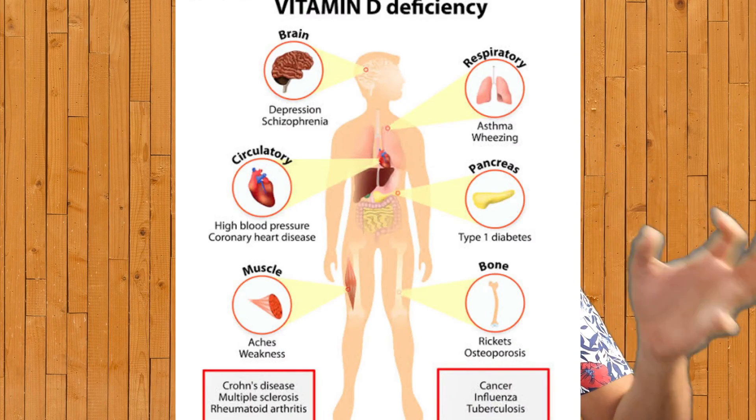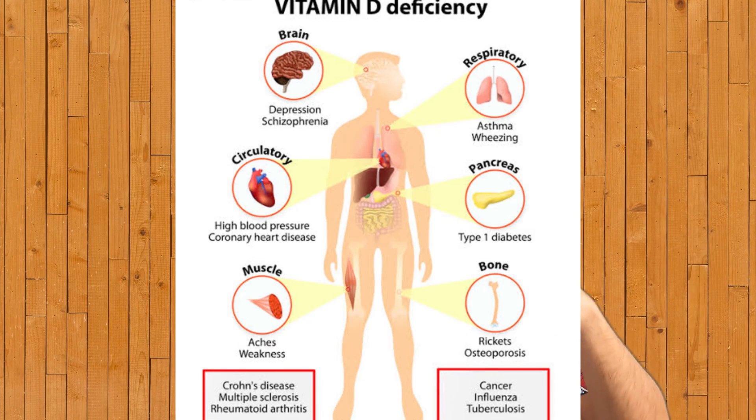Vitamin D also has other non-skeletal effects, and nowadays research is oriented towards finding these non-skeletal effects. But the predominant effects are in calcium and phosphate metabolism. Since calcium is present throughout the body, vitamin D probably has effects on other parts as well, but the main effects are on calcium and phosphate — and thereby on the skeleton, bones, and muscles.